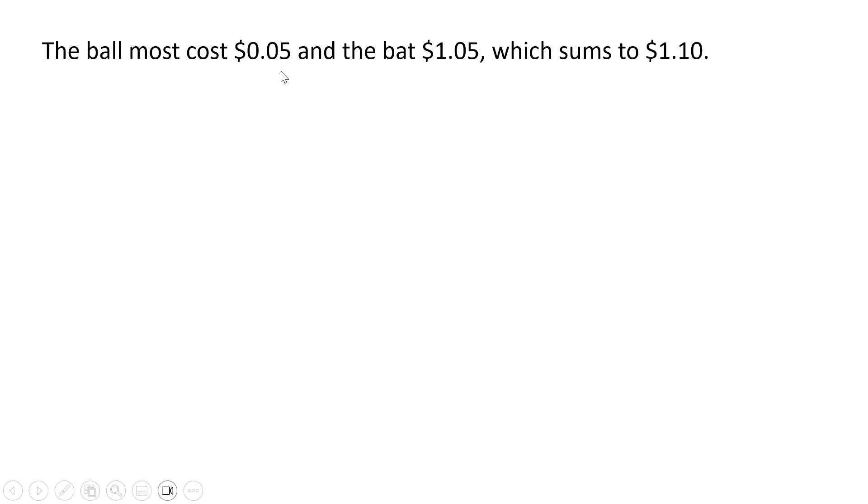The ball must cost $0.05 and the bat $1.05, which sums to $1.10. And you'll notice the difference between the cost of the ball and the bat. The difference is $1.00. Here's the formal solution.